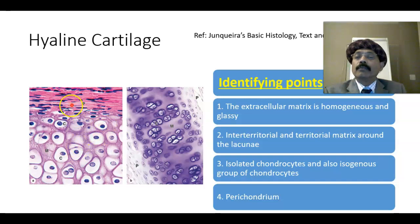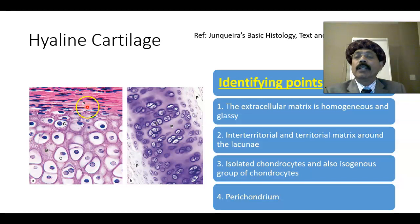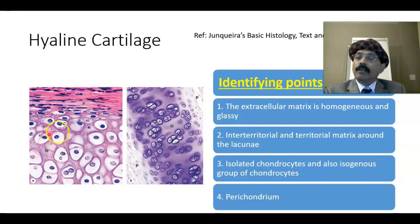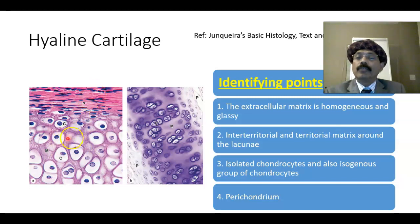The perichondrium has two layers. The outer layer is fibrous and the inner layer is cellular. The outer fibrous layer contains fibroblasts. The inner cellular layer contains chondroblasts — that is the chondrogenic layer. The hyaline cartilage is avascular, but the perichondrium is vascular. Hyaline cartilage has no nerve supply.